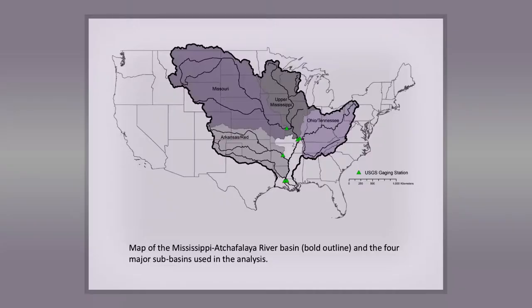The paper also examines spatial and temporal patterns in nutrient stoichiometry among four large sub-basins of the Mississippi River: the Upper Mississippi, the Ohio-Tennessee, the Missouri, and the combined Arkansas-Red Rivers.